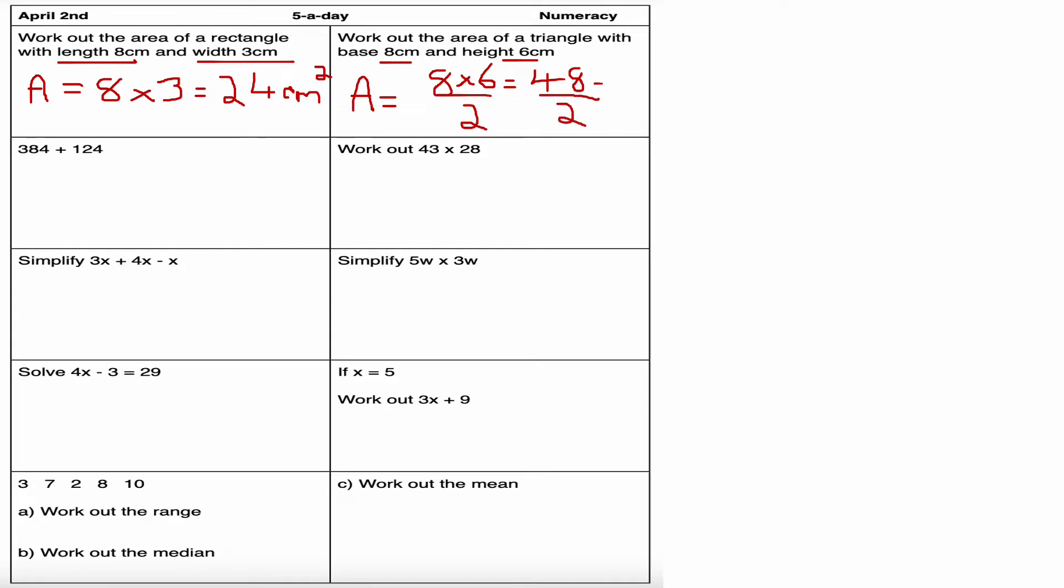24 centimeters squared. A half of 48. If you're unsure how I've done that, I said a half of 40 is 20, a half of 8 is 4, 20 plus 4 is 24. But you could always use the bus stop method. How many twos go into 4? Two, with remainder zero. How many twos go into 8? The answer is 4 because two fours are 8 and there is zero left.